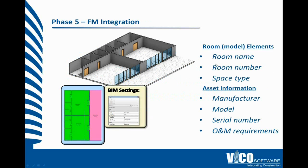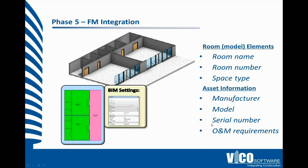We do that by linking up the room types, so room elements inside the BIM model can be associated with the pieces of equipment. We can use the instance parameters to input information like manufacturer, model number, serial number, and any other O&M information that may be necessary. So instead of the traditional approach where 45 three-ring binders are dropped off at the end of the project and no one ever has the courage to dig through them all, we put that right inside the coordinated BIM model.